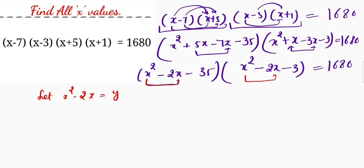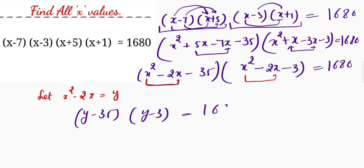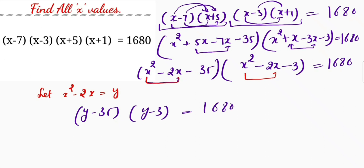Next I will substitute y here. So this will become (y minus 35) and this will become (y minus 3), which is equal to 1680.